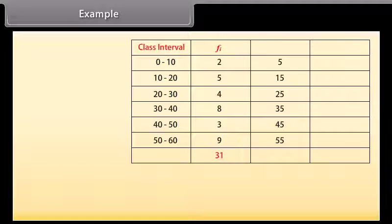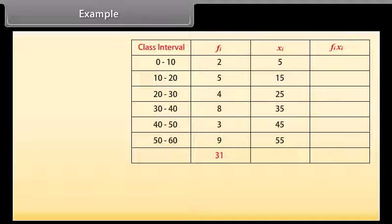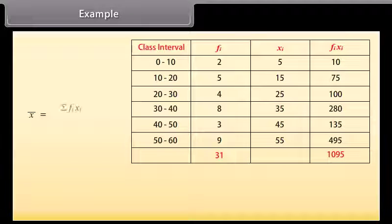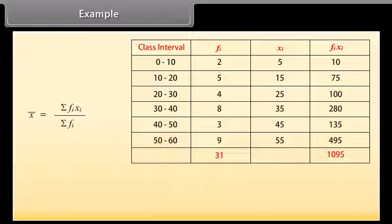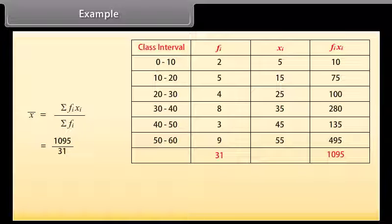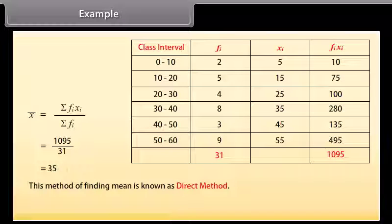Find the mean of the given data: denote the class marks as Xi, then find the product of Fi and Xi, and finally find the mean using the formula X-bar equals summation of Fi·Xi divided by summation of Fi, which equals 1095 divided by 31, which equals 35. This method of finding mean is known as the Direct Method.